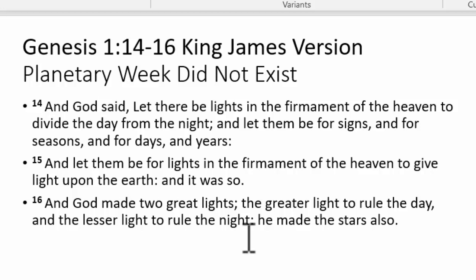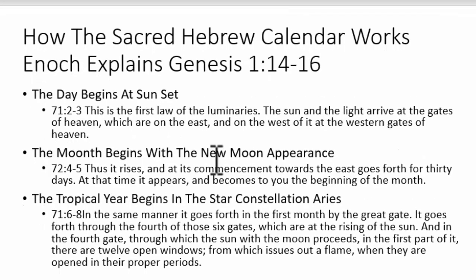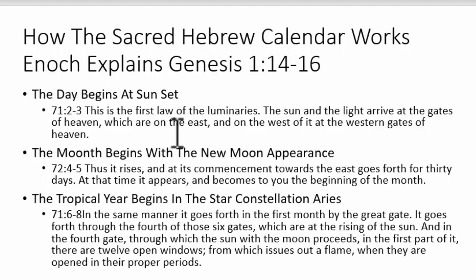When we get into the First Book of Enoch — which was actually written before the book of Genesis — we find the description of how the Hebrew calendar works, how the sun, moon, and stars are used as timepieces. In chapter 71 verses 2 and 3, we learn that the day begins with sunset. Although man changes his day at 12 a.m., the biblical day changes at sunset.